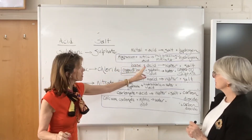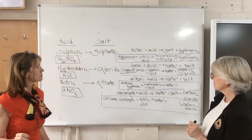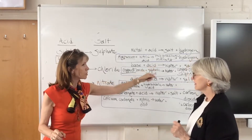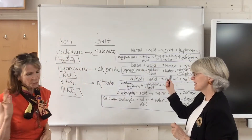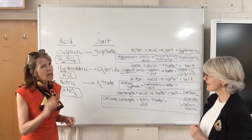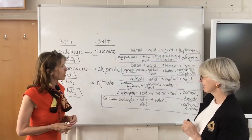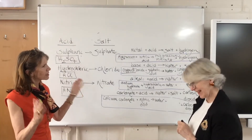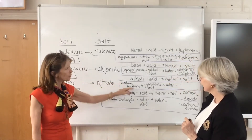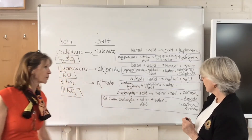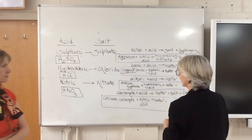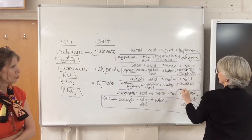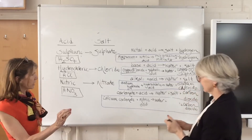Just checking — the mnemonic for base plus acid is BAWS: base, acid, water, salt. Moving on, the next equation is alkali plus acid gives water plus salt. Using sodium hydroxide and hydrochloric acid: hydrochloric acid gives chloride, and the metal comes from sodium hydroxide, so the salt is sodium chloride.